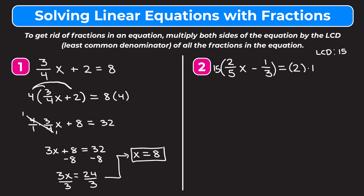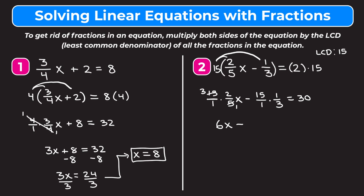We multiply the left side by 15 and the right side by 15. On the left side we distribute: 15 over 1 times 2/5x, and then we distribute the 15 to the 1/3, writing it as 15 over 1 times 1/3. This equals 2 times 15, which is 30. Now on the left, we cross-reduce 15 over 1 times 2 over 5: 5 goes into 15 three times, 5 goes into itself once, so we multiply the numerators: 3 times 2 is 6, giving us 6x. Similarly, for 15 over 1 times 1 over 3, we cross-reduce by dividing both by 3: 15 divided by 3 is 5, 3 divided by 3 is 1, giving us 5. So this equals 30.